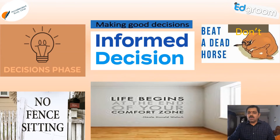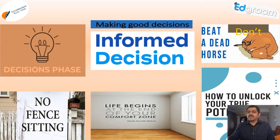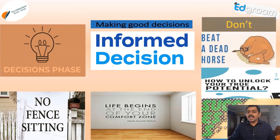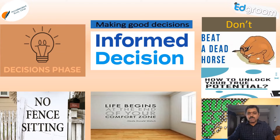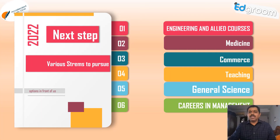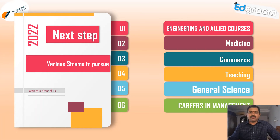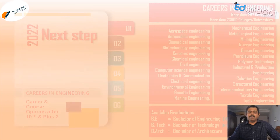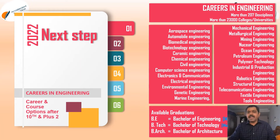So how do you unlock your true potential? The student has to realize, and parents have to make them realize the content. Self-realization is very, very important. Now coming to the various streams to pursue after 10th: first, engineering and allied courses; second, medicine; third, commerce; fourth, teaching; fifth, general science; sixth, careers in management. Let us look at each one in detail.